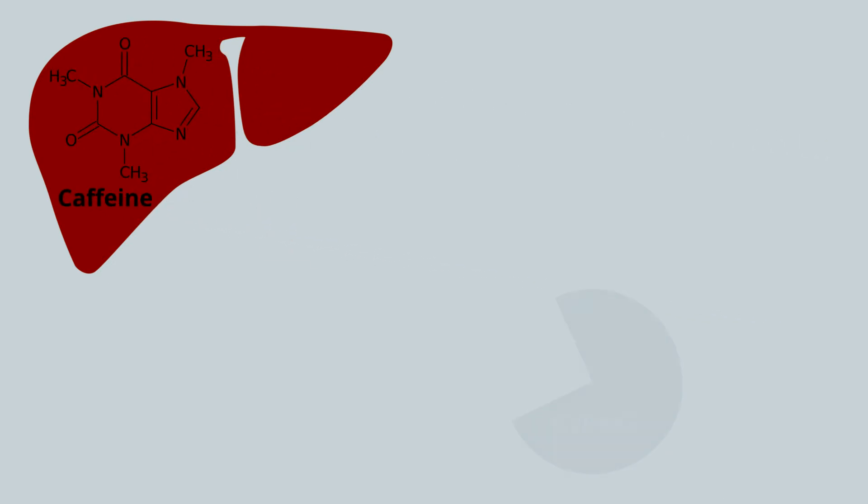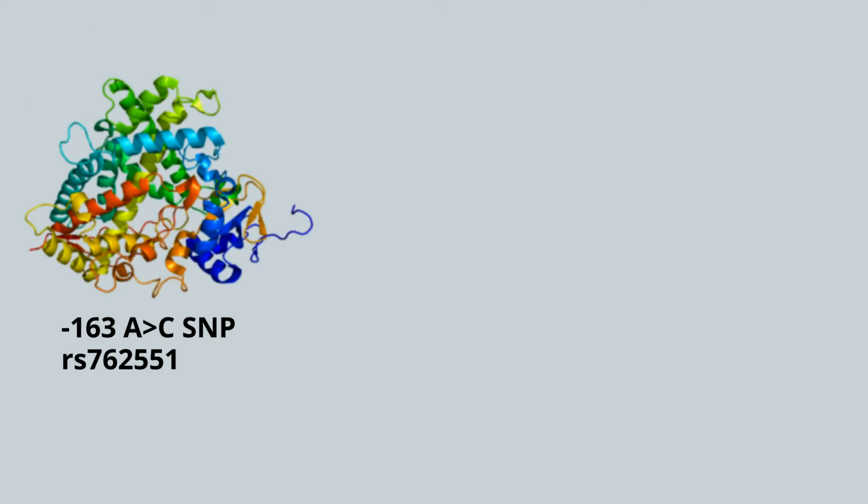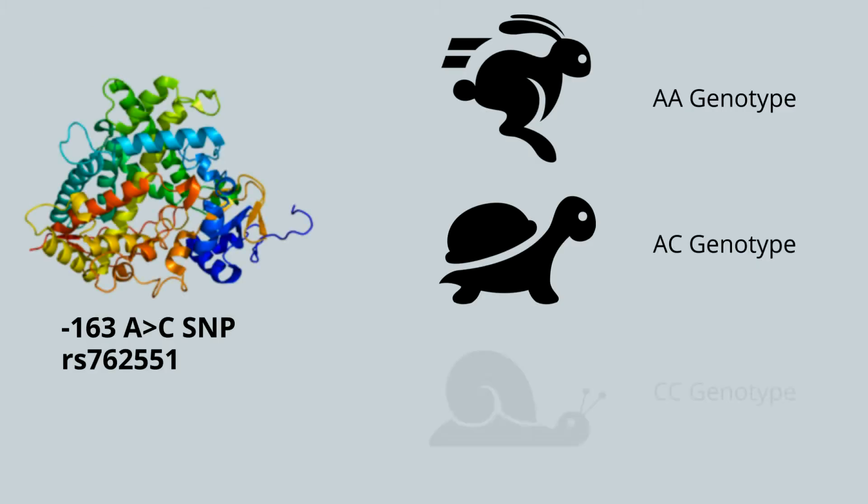It's metabolized in the liver by an enzyme called CYP1A2 that is encoded by the CYP1A2 gene. A version of this gene alters the rate of caffeine metabolism, leading to fast, slow, and ultra-slow metabolizers.